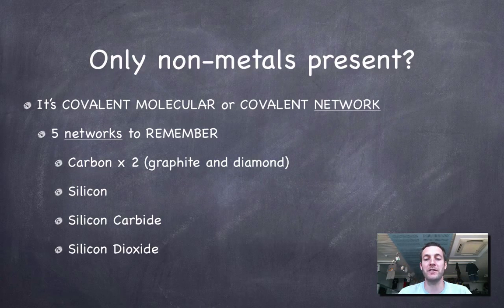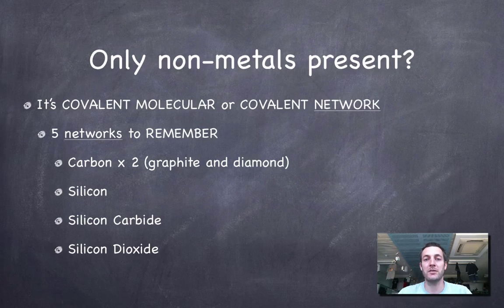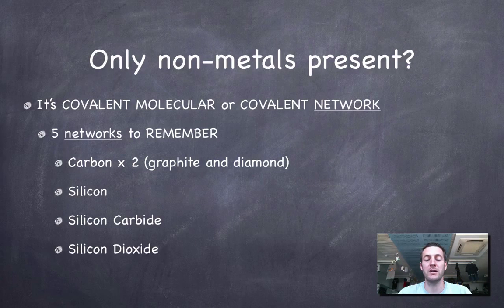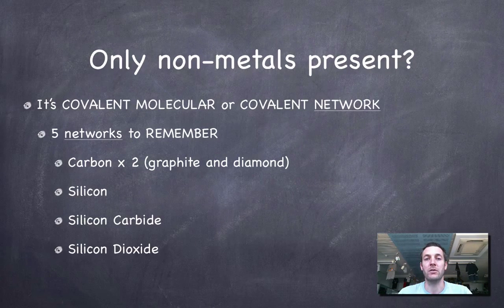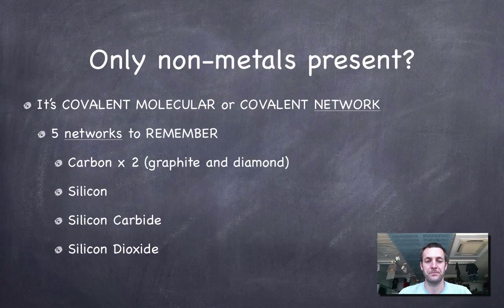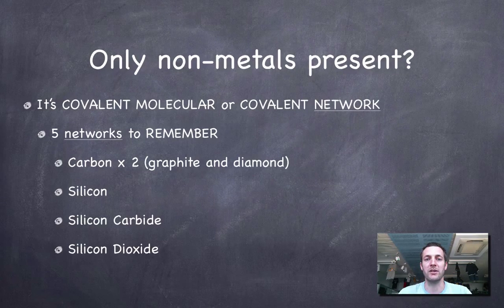If your memory is terrible, then I guess you'd assume that it was covalent molecular. But if your memory is a bit better than that and you can remember five substances, then you know all the covalent networks that you're expected to remember. They are: two carbons—graphite and diamond; silicon; silicon carbide, so that's a compound between silicon and carbon; and also silicon dioxide, or glass or sand.